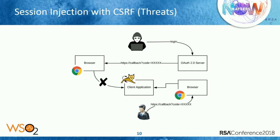The first threat vector is session injection with cross-site request forgery. In this case we have a public authorization server, an attacker, a victim, and a client application. Both the attacker and the victim have accounts in the public authorization server — it's like Facebook where anybody can create an account. The attacker first tries to log into the client application and gets redirected to the public authorization server. The attacker then blocks the authorization response coming from the authorization server to the client application in the browser — that authorization response never hits the client application.